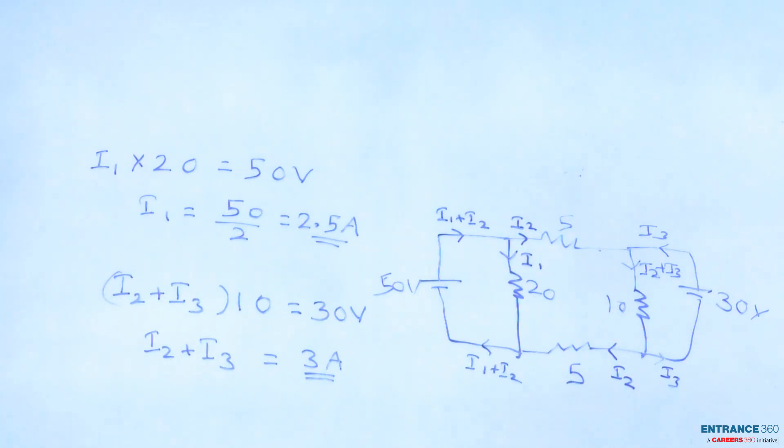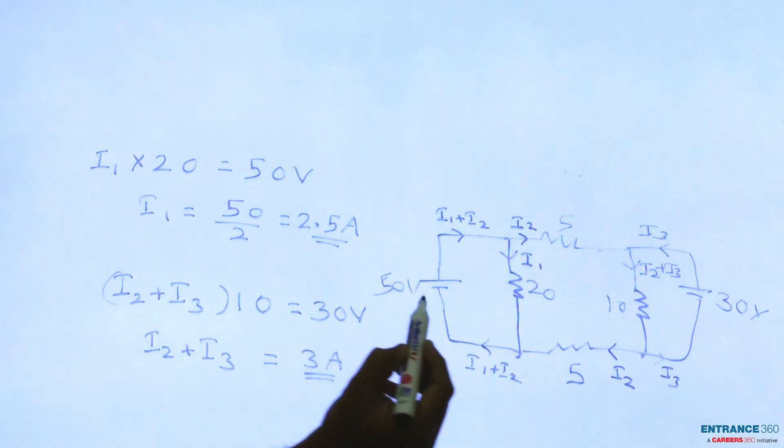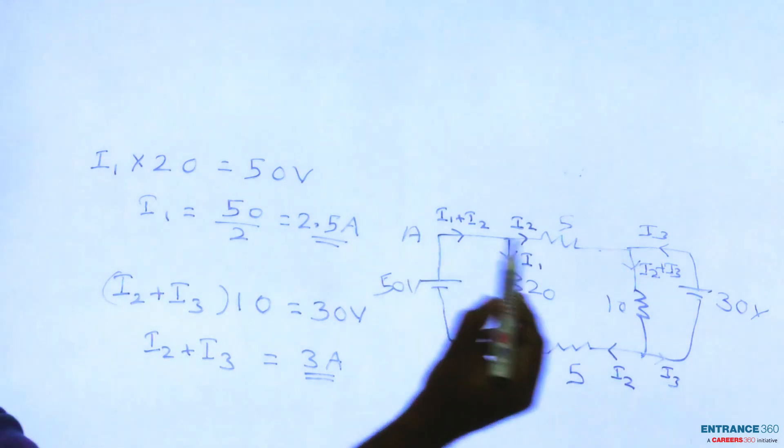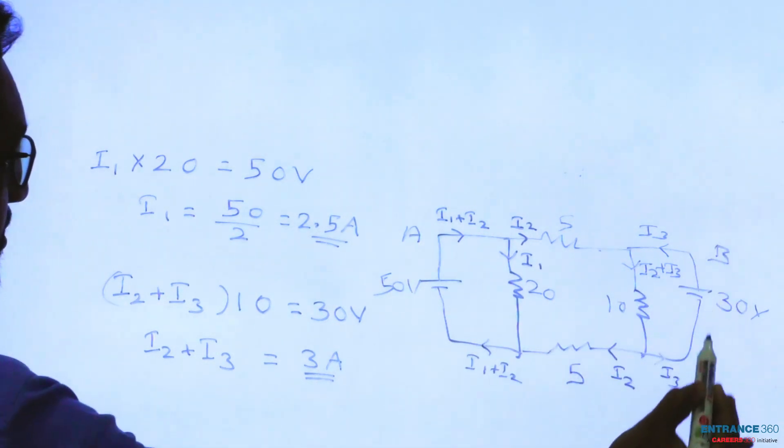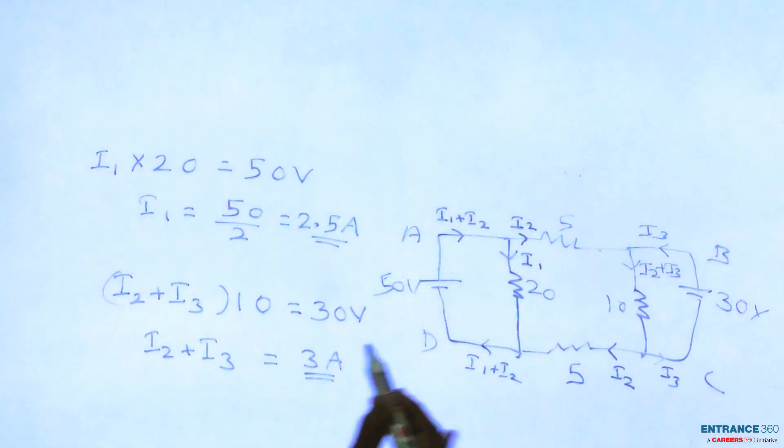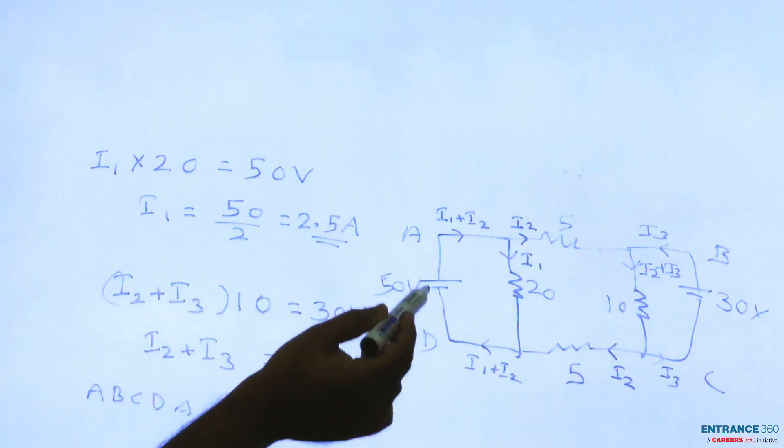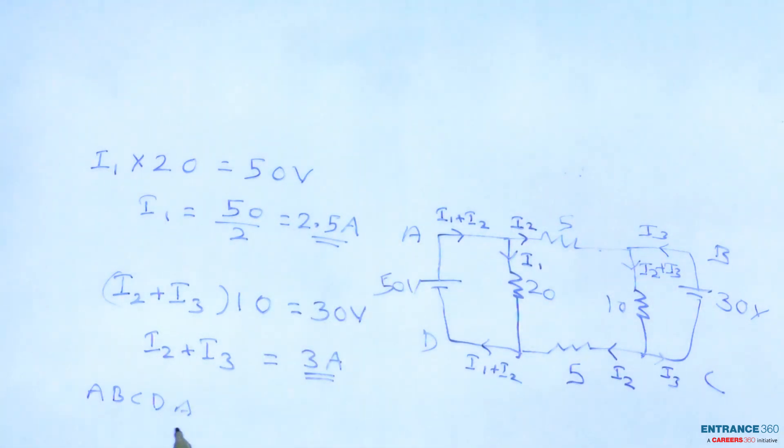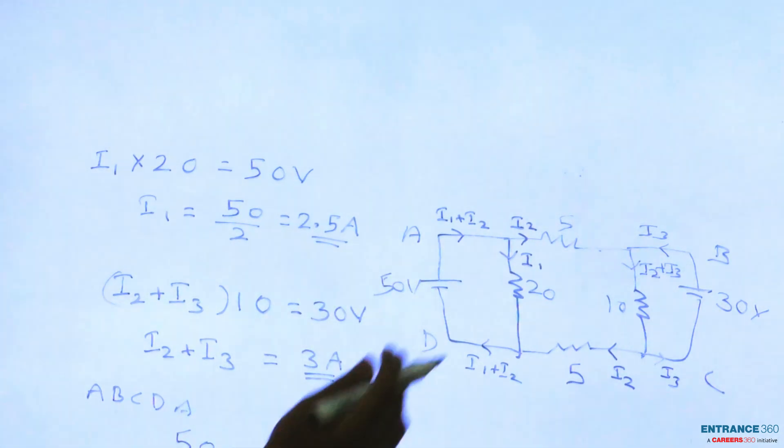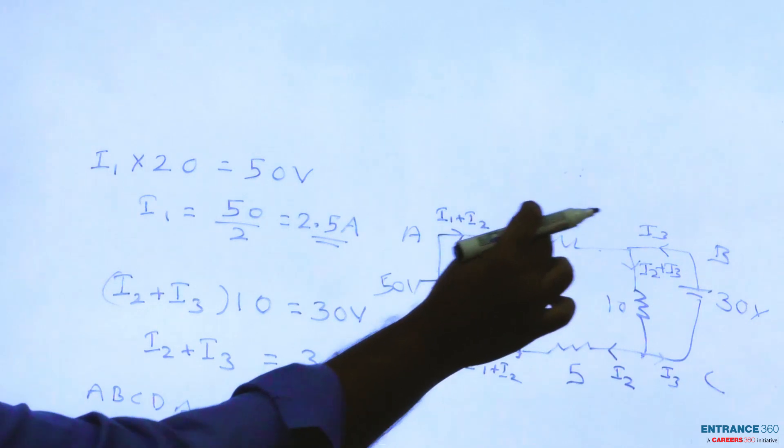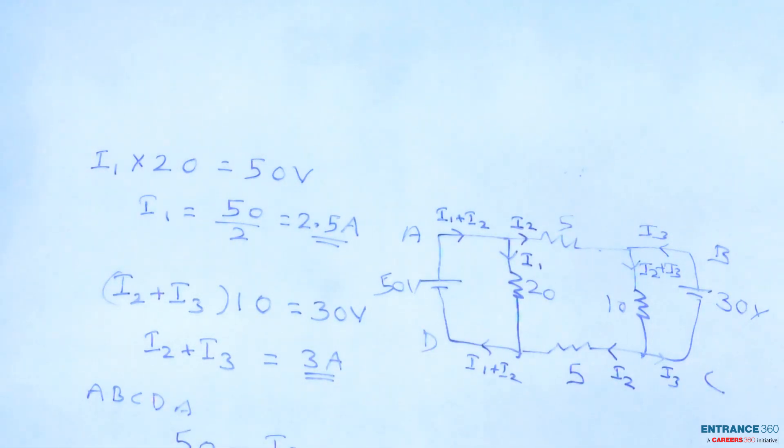Consider the loop ABCDA. Here we have 50 volt, 50 minus current flowing through 5 ohm, which is I2 times 5. We are applying KVL here.